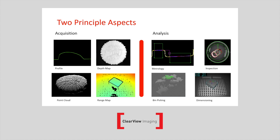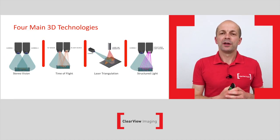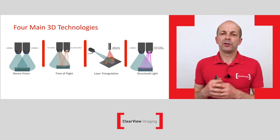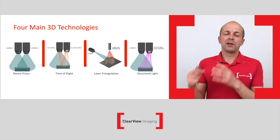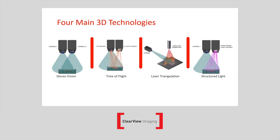On the analysis side, the terms are very familiar if you're used to talking about 2D systems, but on the acquisition side things are very different. In terms of the technology required to acquire 3D information, this presentation will cover the different types of 3D technologies: stereo vision, time of flight, laser triangulation, and structured light.